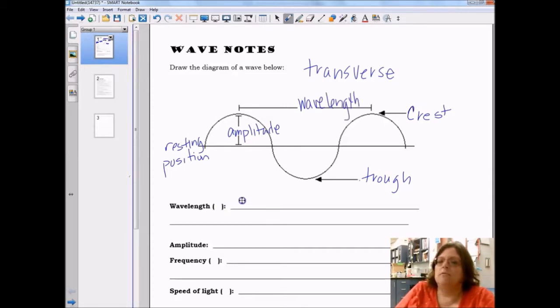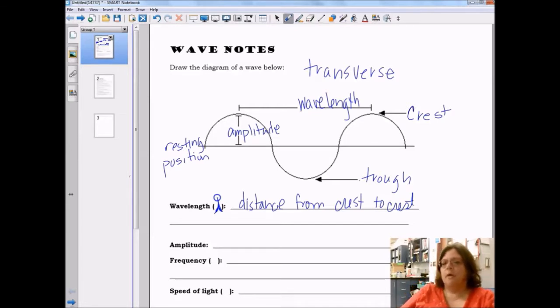So wavelength is distance from crest to crest and we use the Greek letter Lambda, which looks like an upside down Y. It's the lowercase lambda, uppercase looks like an upside down V, to represent wavelength.